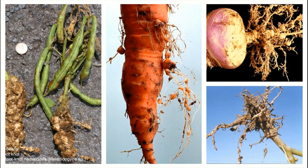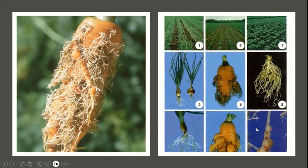These are some other pictures showing the root-knot disease in peas, carrot, turnip, and other plants. Here you can see the root-knot disease in different vegetable crops.